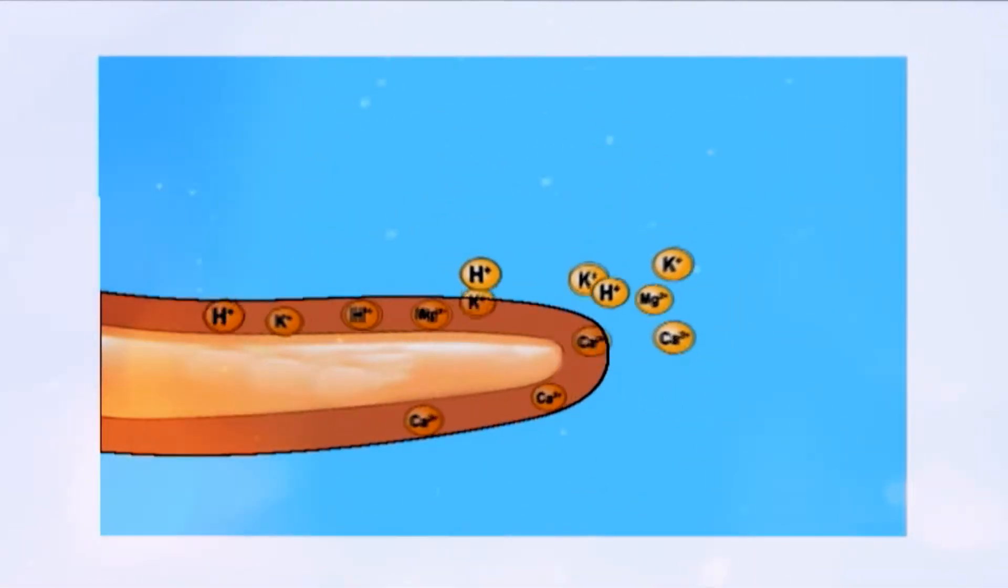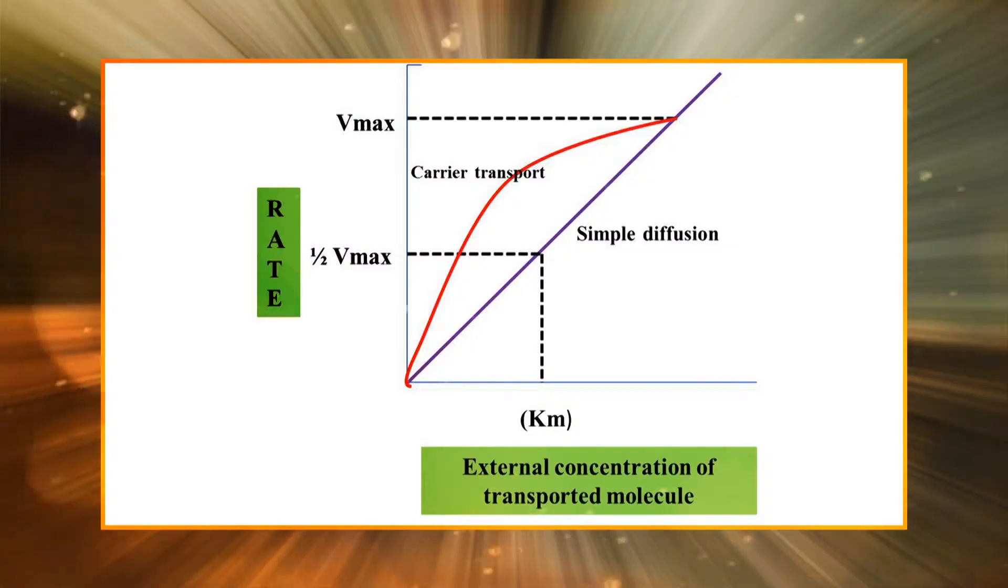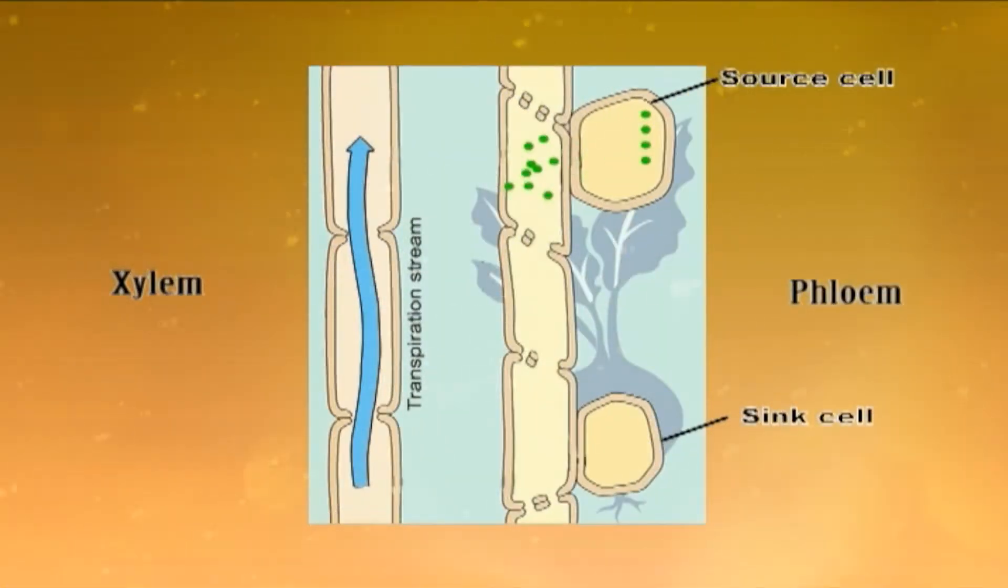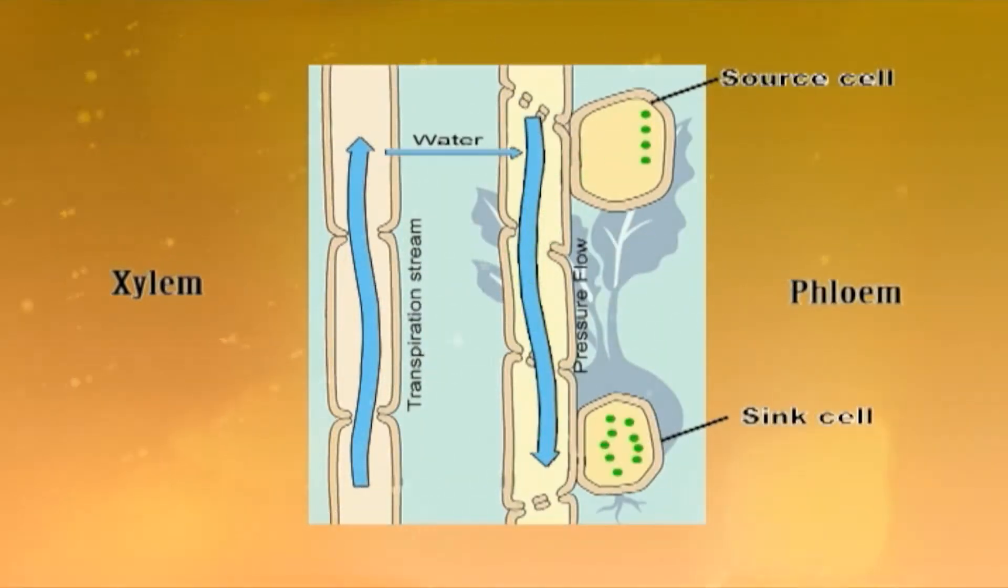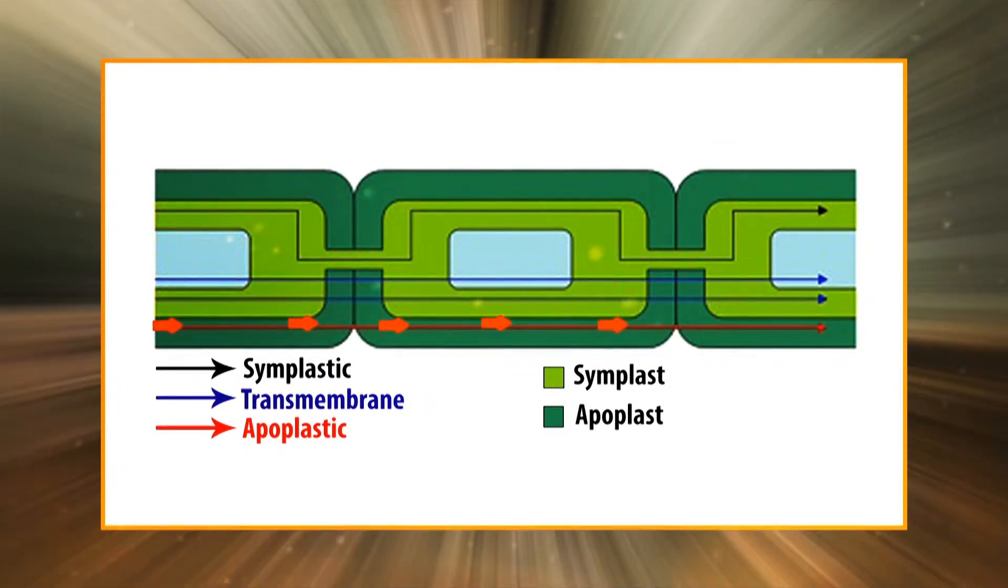How nutrients are uptake and transported across the cell membrane through active and passive processes, how plants translocation in phloem occurs and its dependency on phloem loading and unloading.